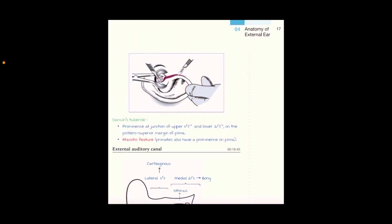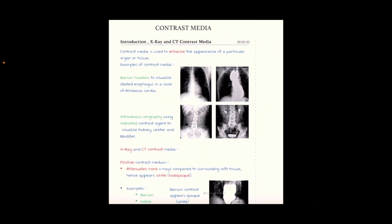Firstly, here is a screenshot of the notes showing the anatomy of the external ear, showing various important features of the external ear and external auditory canal. Also, for example, contrast media — the X-ray and CT contrast media. These pictures help you analyze things properly and mark questions; you can easily select the answer by seeing these pictorial representations.